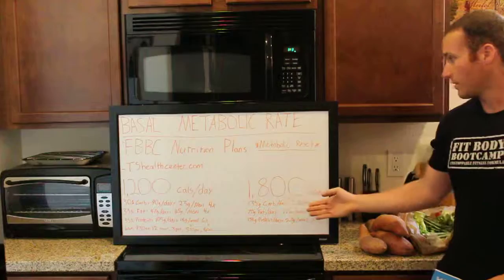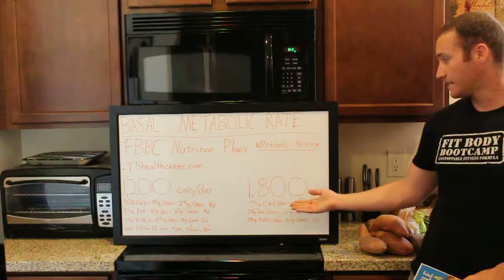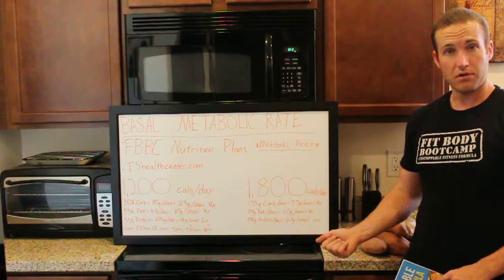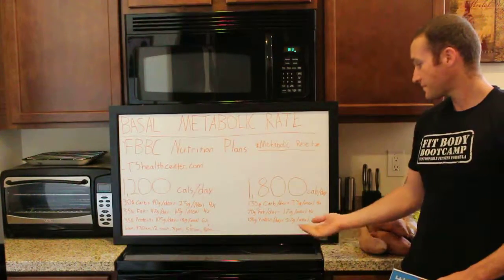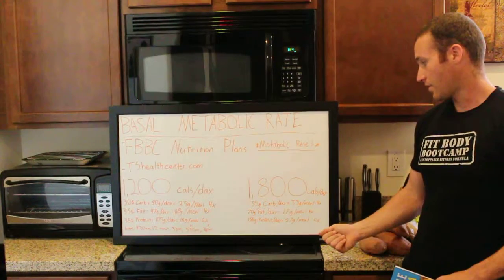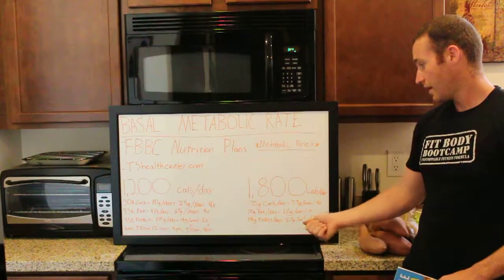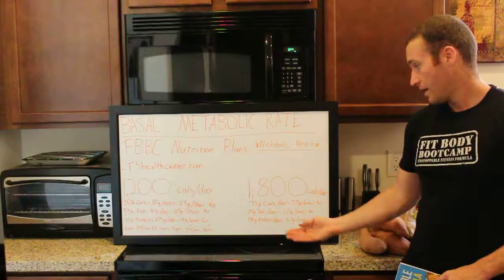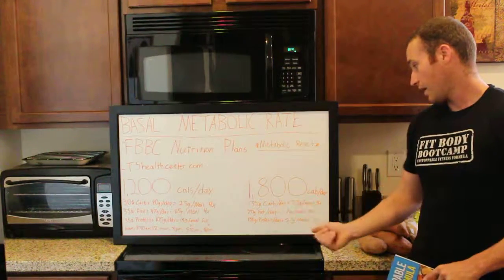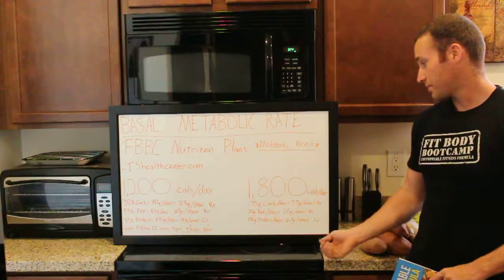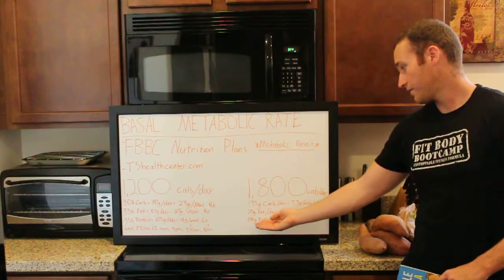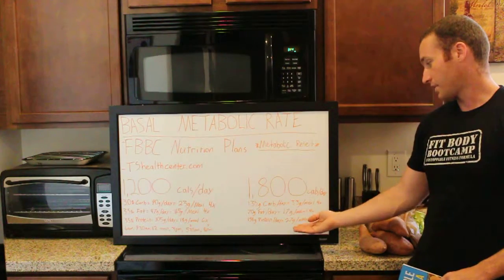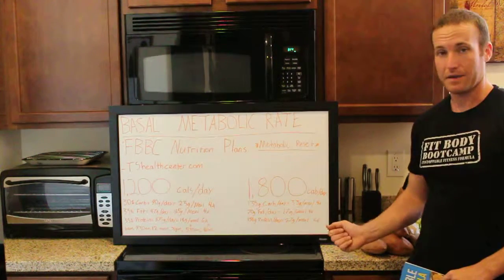The same principle applies for 1,800 calories a day — the ratios will be a little bit different. That comes out to 135 grams of carbs per day, which is 33 grams of carbohydrate per meal. 70 grams of fat per day, 17 grams per meal. And 158 grams of protein per day, which is 27 grams per meal, six times.